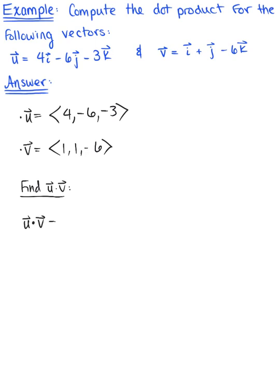Multiplying vector u times vector v with our dot product. Notice the dot in between. This is going to leave us with 4 multiplied by 1 plus negative 6 multiplied by 1 plus negative 3 multiplied by negative 6. And so this leaves us with 4 minus 6 plus 18 for a beautiful final answer of 16. So here is our first solution.